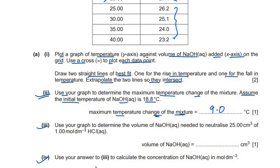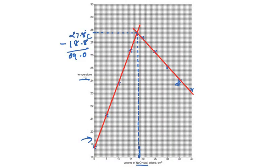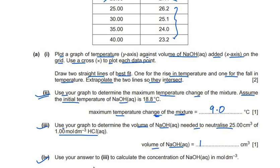The next sub-question asks: use your graph to determine the volume of NaOH needed to neutralize 25.0 cm³ of 1.00 mol/dm³ HCl. Drawing a vertical line from the intersection point down to the x-axis, we can read off 17.5 cm³ of NaOH required for the neutralization.